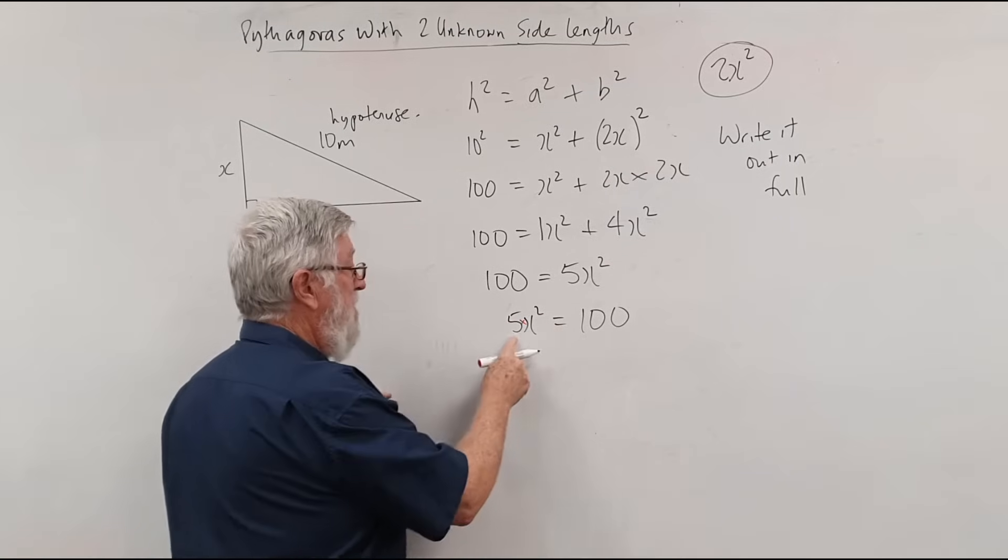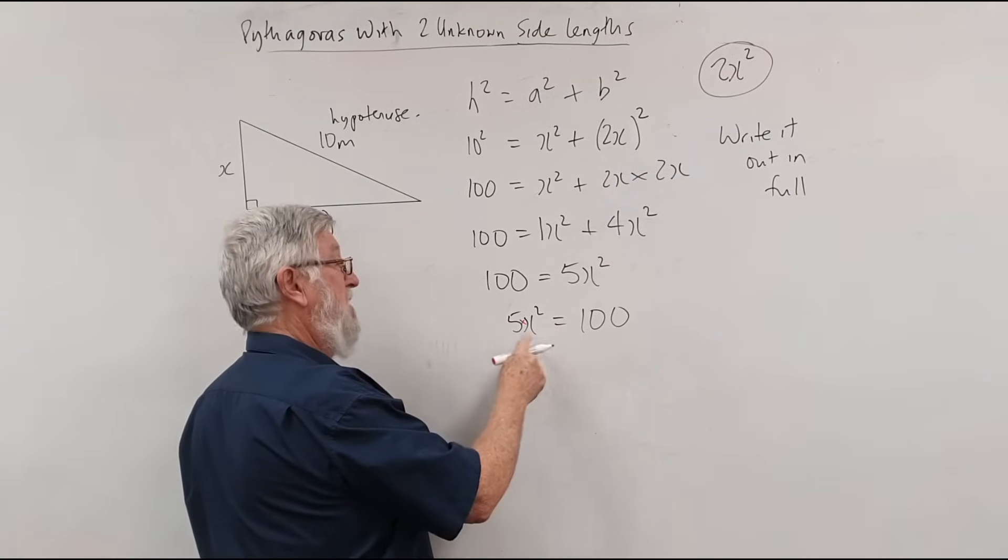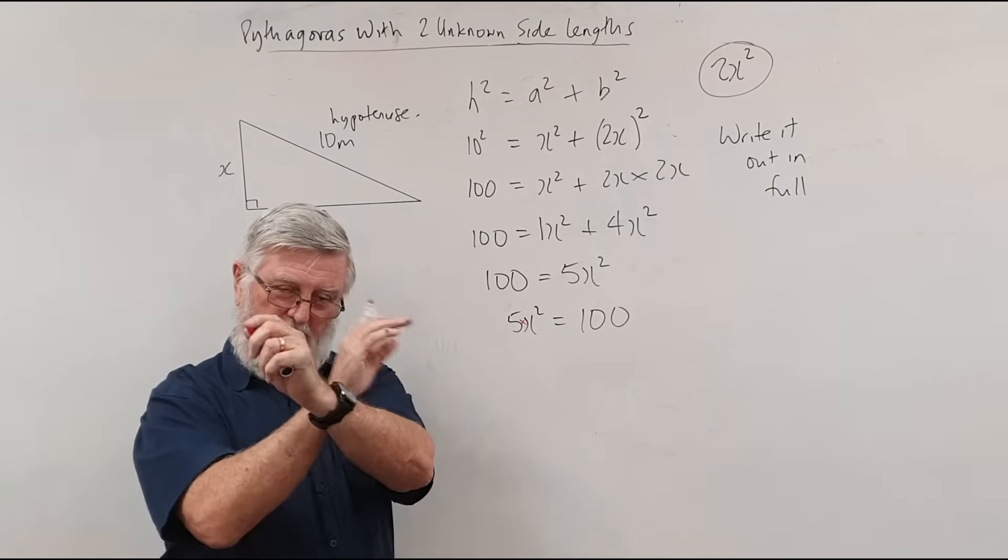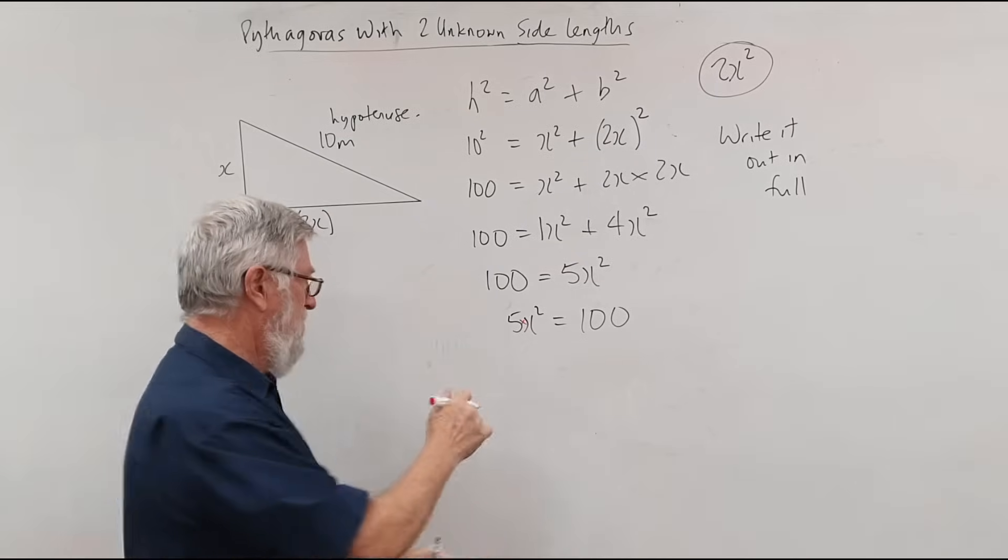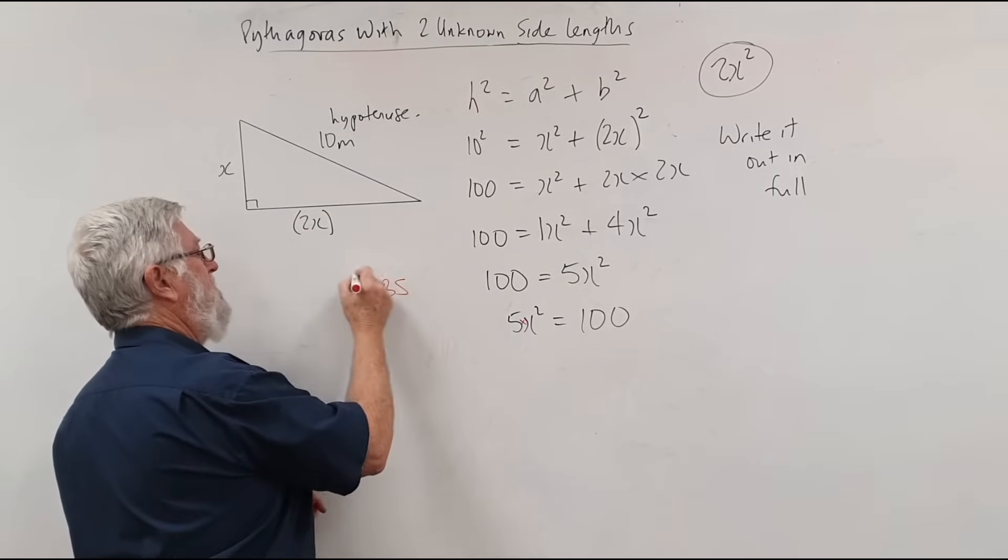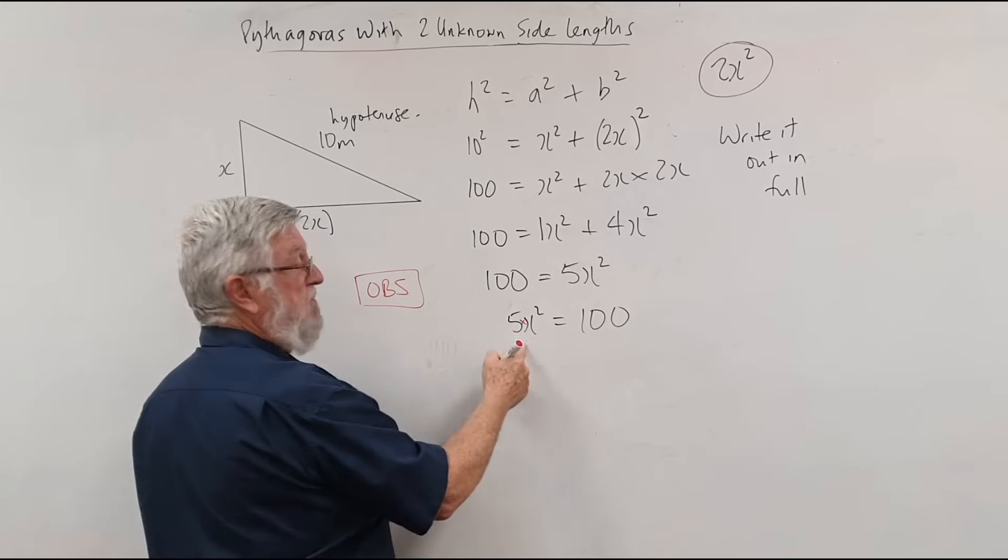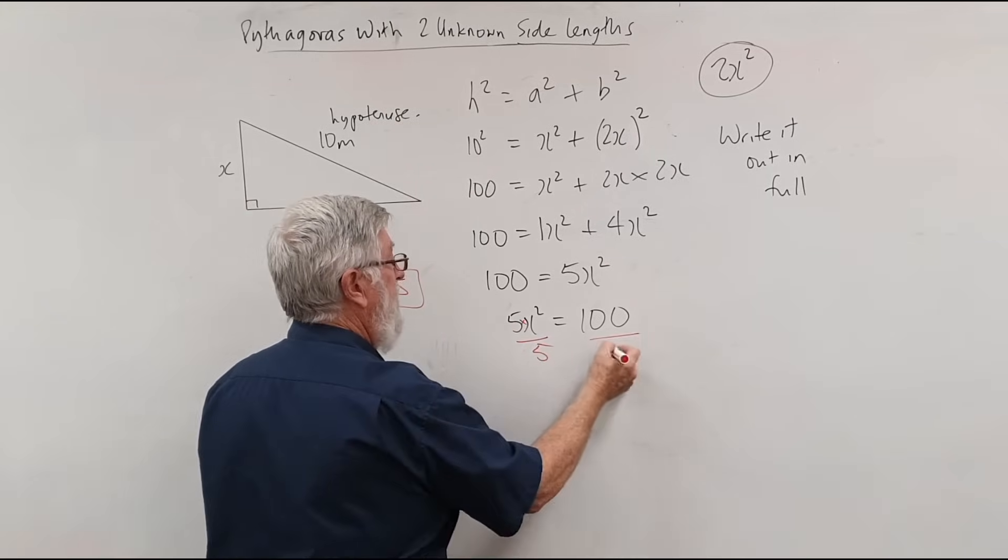Between the 5 and the x squared is a multiply. Just remember in maths, whenever a number and a letter are written next to each other, or a letter and a letter, there's always a multiply in between. And the opposite, I talk about the opposite to both sides. The opposite of times by 5 is divide 5 and divide 5.